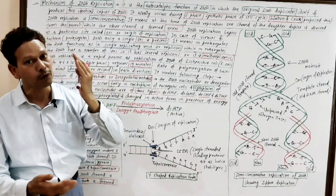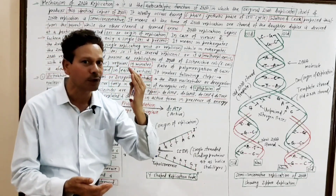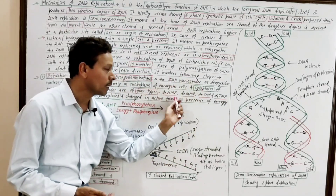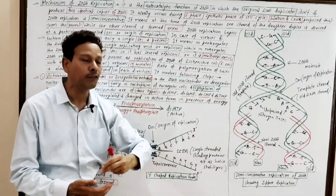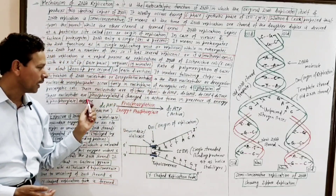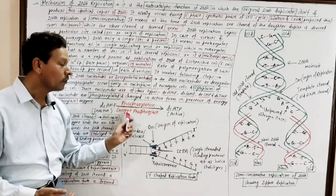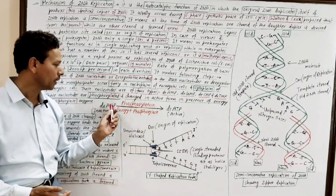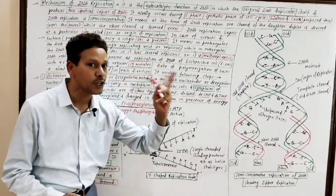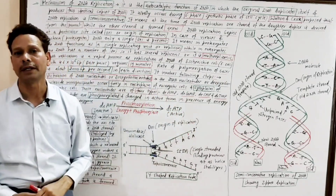To summarize step one: DNA replication requires DNA nucleotides, but these nucleotides are found in inactive monophosphate form. They are converted into active triphosphate forms by phosphorylation in the presence of energy and the phosphorylase enzyme.